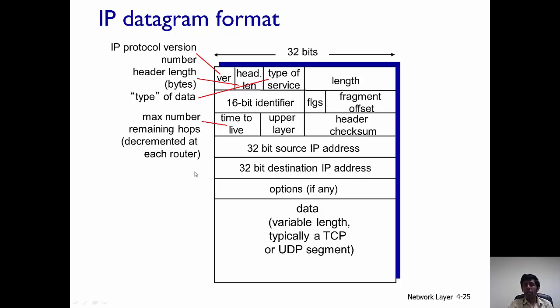Time to live is the maximum number of remaining hops. If you set the time to live at the source to be 30, it means that if the destination is not reached within 30 hops, this IP datagram is going to be discarded. Then there is this field called upper layer, which is indicative of the upper layer protocol that's being used.